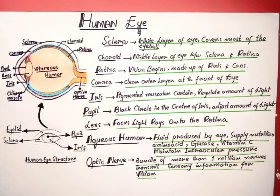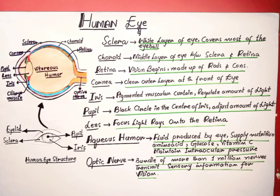Hello everyone, welcome to my YouTube channel 'Learn Science With Me.' Today we are going to discuss one of the most important structures of our body, which is the human eye. The human eye is the sensory organ that reacts with light and allows us vision.